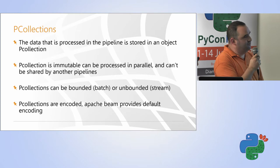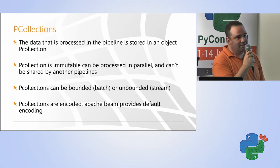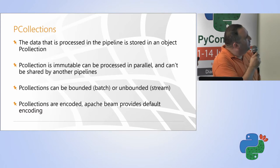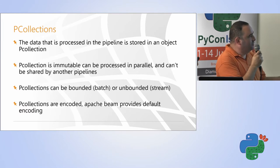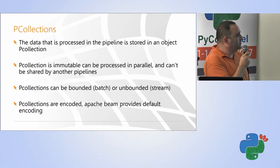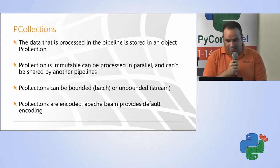And the basic model, the programming model of Apache Beam is very similar to Spark. If you are working with Spark, like Spark that we have RDD or data frame, here we have p-collections, which is data that is stretched out to all the nodes in the cluster that performing the data processing. And the p-collection is immutable, so every time that you are changing the data itself, it creates another p-collections. And it cannot be shared by any other pipeline, so it's thread-safe. It's usually more thread-safe than usually, than other technologies. And you can work with p-collection as bounded, as batch, or you can perform windowing and decided to work it as a stream. And p-collections are encoded, and the Apache Beam provides default encoding for the data that we are working with.